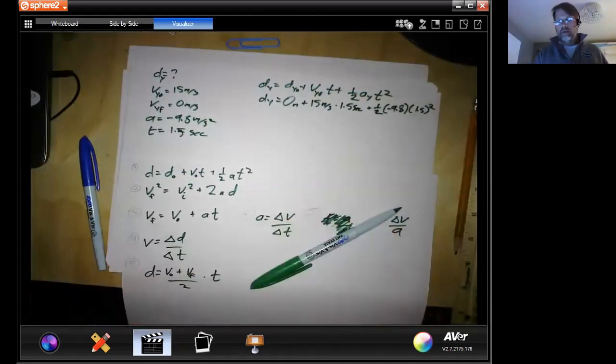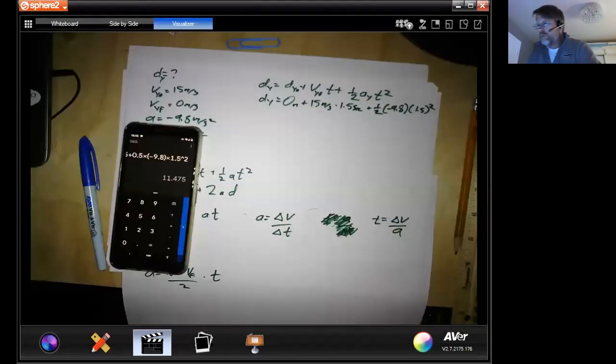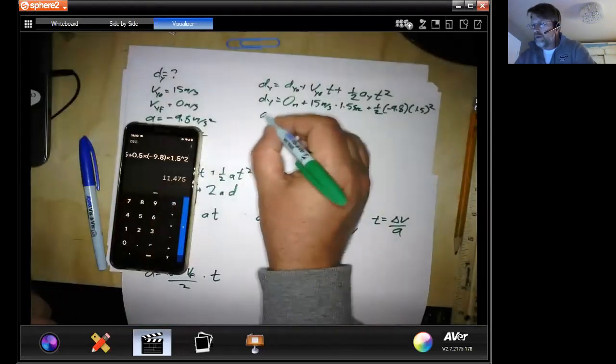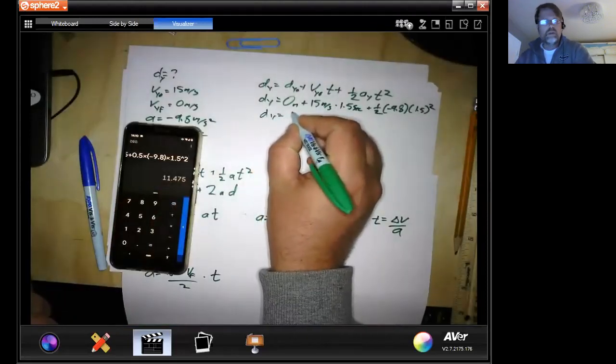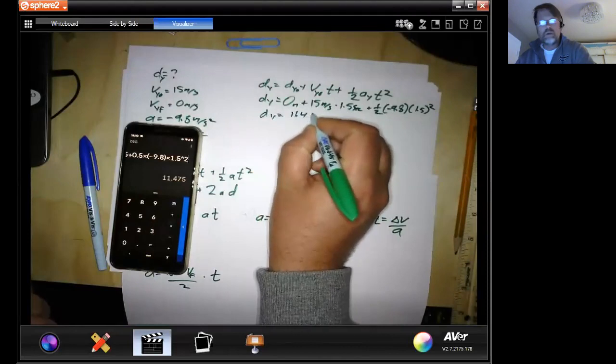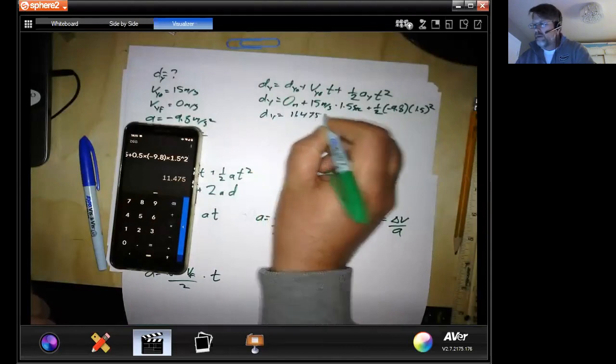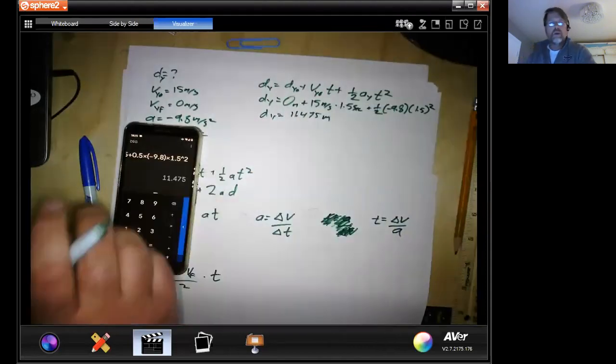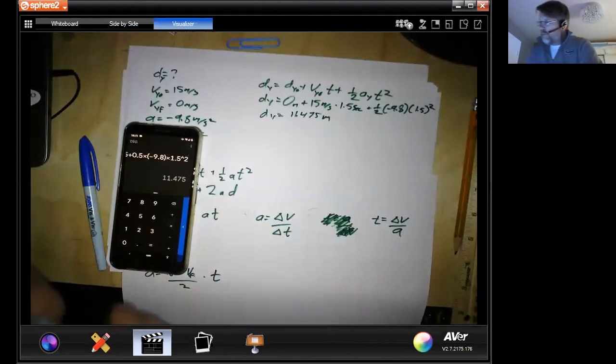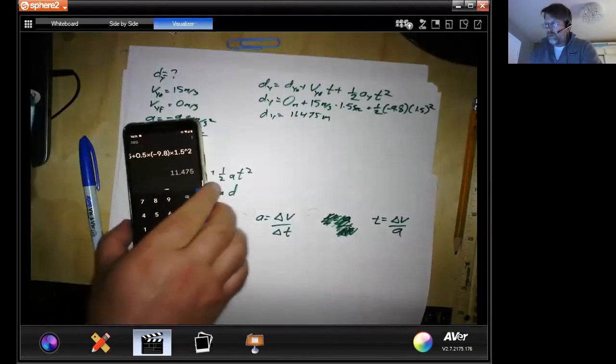So plug all those numbers in and we get dy equals 11.475 meters. And that gives us our distance in the y.